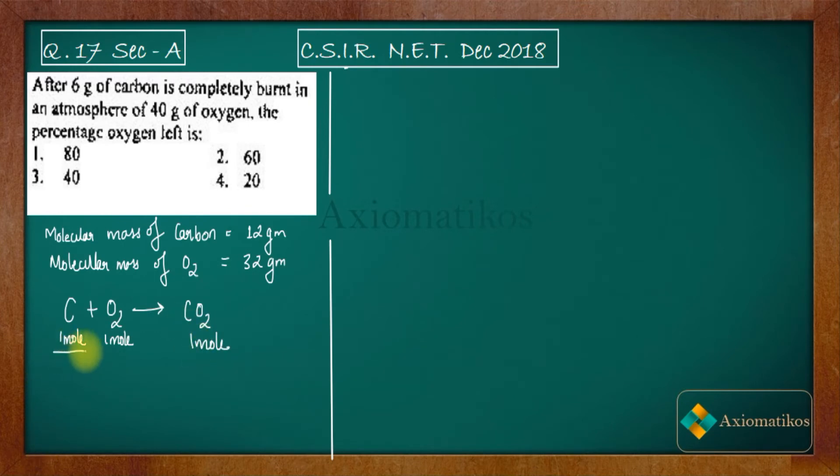Now you don't have one mole here. Instead of one mole, see one mole of carbon is 12 grams, but in the question it was given that you have 6 grams of carbon. So instead of one mole in the problem, you have 0.5 mole. It's exactly half. So because you have half mole of carbon, in order to burn half mole of carbon, you need half mole of oxygen. So 0.5 mole of carbon needs 0.5 mole of oxygen to combine and form 0.5 mole of CO2.